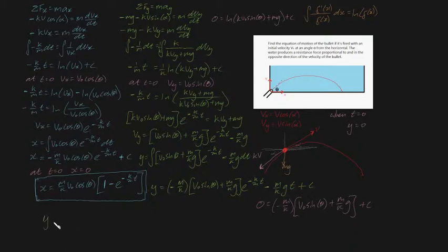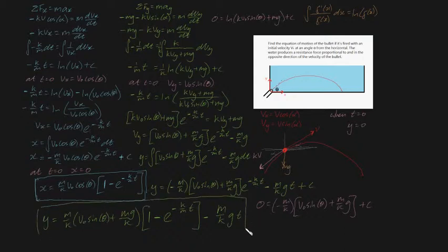Well, we know that y must then be equal to m on k times by v0 sine theta plus mg on k times by, let's see, we need to account for c and we need to account for this term. So it will be 1 minus e to the minus k on mt minus m on k gt. That's accounting for our integrational constant as well. Awesome.